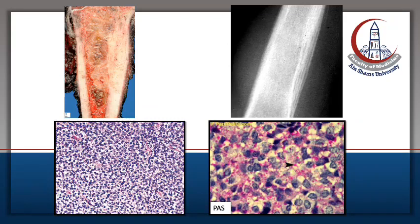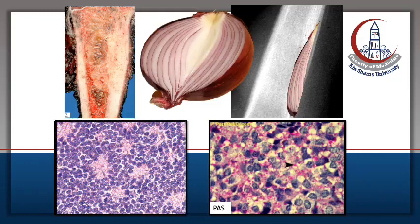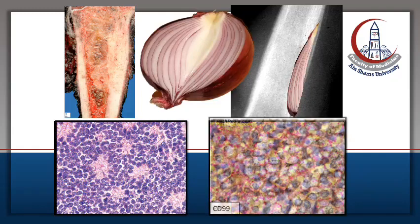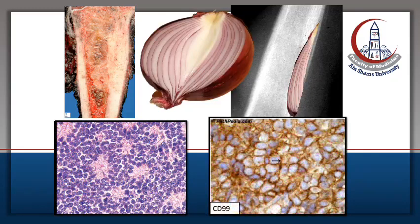It is a diaphyseal tumor with reactive onion skinning bone appearance on X-ray. It is a hypercellular small round blue cell tumor with rosetting, stain positive with PAS due to glycogen, and stain positive with CD99 on immunohistochemistry.